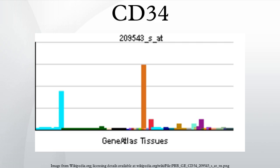Cells observed as CD34-positive and CD38-negative are of an undifferentiated, primitive form — that is, they are multipotential hematopoietic stem cells. Thus, because of their CD34-positive expression, such undifferentiated cells can be sorted out.